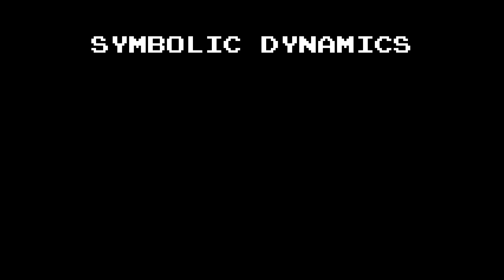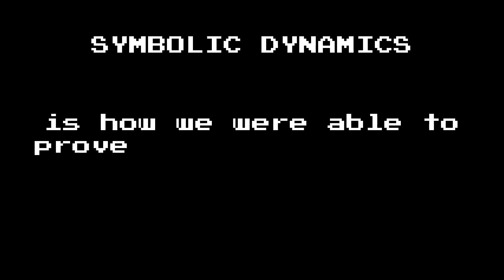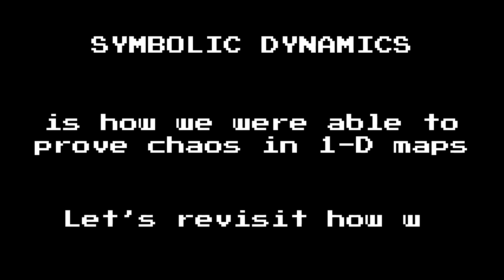Symbolic dynamics is how we were able to prove or control chaos in various one-dimensional maps. Let's take some time, revisit how we did that in order to prepare for working with the horseshoe.